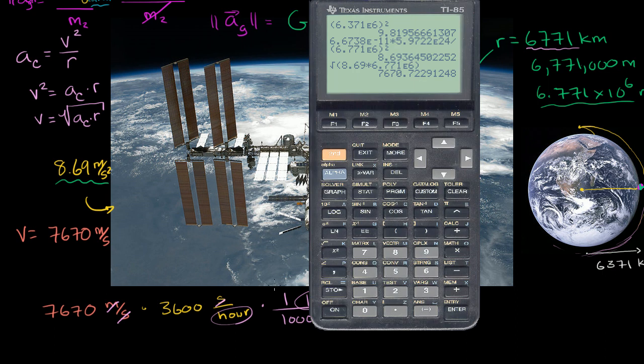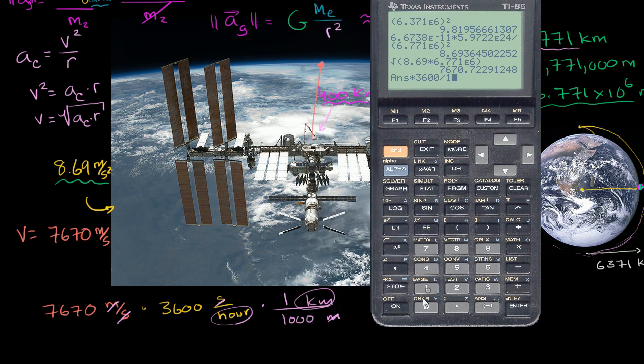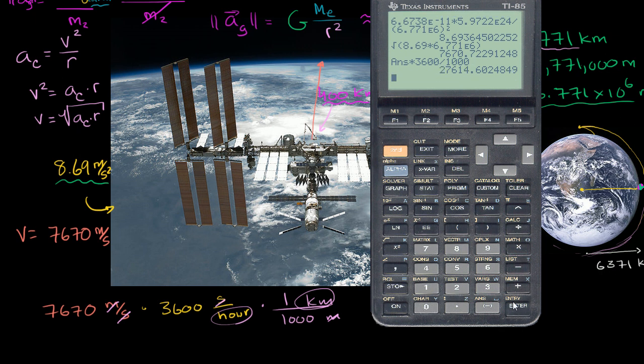So that was our previous answer. We multiply by 3,600 and then divide by 1,000. So we really could have just multiplied by 3.6. And then we get roughly 27,600 kilometers per hour. So this is really an unfathomable speed.